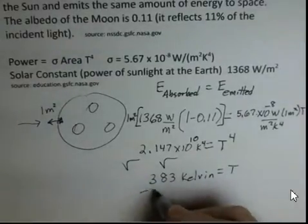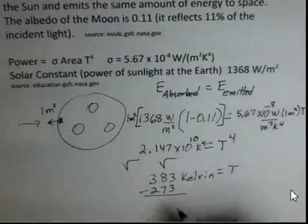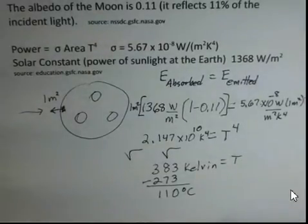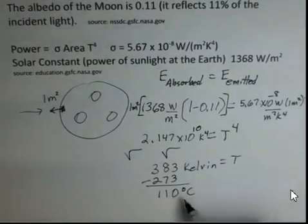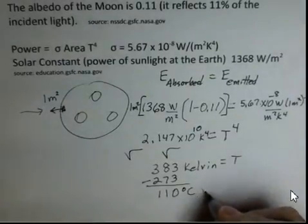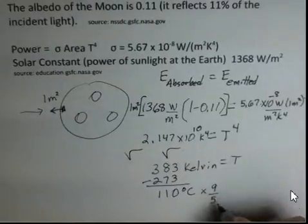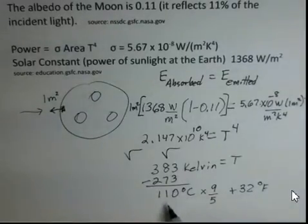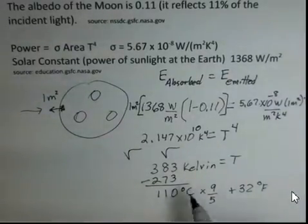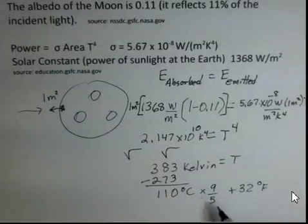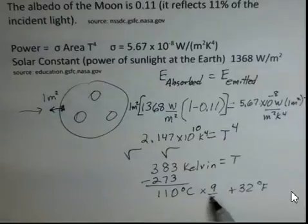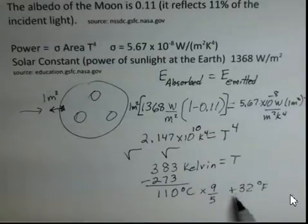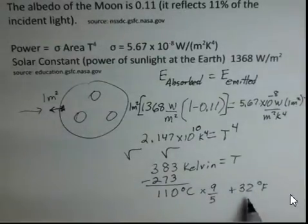And I came up with 383 Kelvin for the temperature directly beneath the sun on the surface. If we convert this to Celsius, I have to subtract 273 to get the Celsius number. So I get 110 degrees Celsius. And if I want to convert that into Fahrenheit, to convert Celsius to Fahrenheit, we have to multiply by nine-fifths. And after we do that, we have to add 32. So multiplying by the nine-fifths, we'll get the Celsius number on the same size interval of temperature as Fahrenheit. And then zero Celsius is where ice freezes, water freezes, ice melts. But it's 32 on the Fahrenheit scale. So we have to do a little shifting of adding 32 degrees.